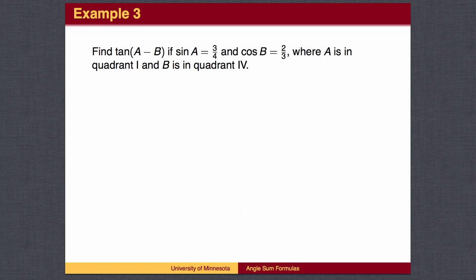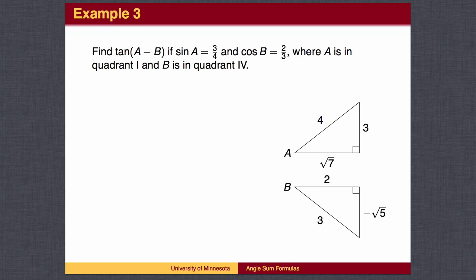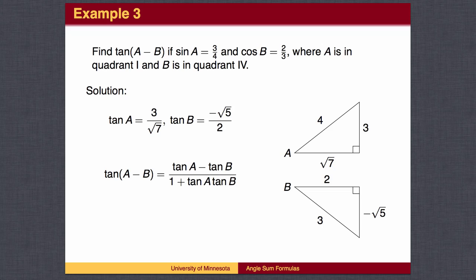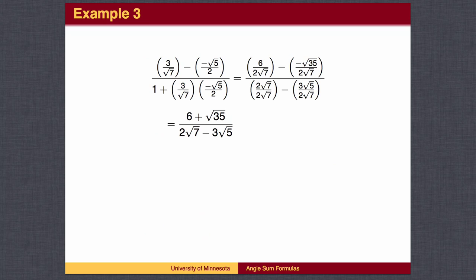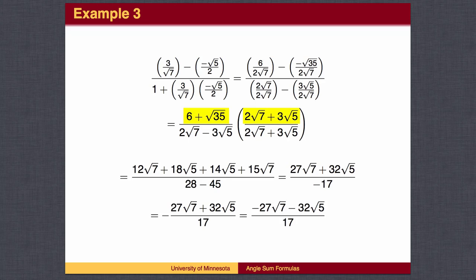The tangent angle sum formula is similar. First, label triangles and use the Pythagorean theorem to find the missing sides. Next, look up the values needed for the formula, plug them in, and simplify. Going through the simplifications slowly: first, find a common denominator — in this case 2 times the square root of 7 — and rewrite all fractions in terms of that denominator. Then multiply the overall numerator and denominator by 2 times the square root of 7. Rationalize the denominator by multiplying by the conjugate. In the numerator, use FOIL; the denominator follows the difference of squares pattern. Combine like terms in the numerator, and finally move the negative sign from the denominator.